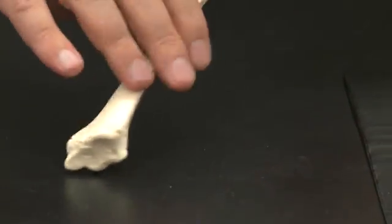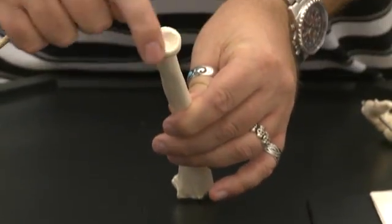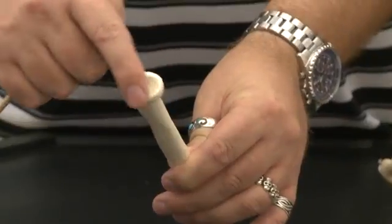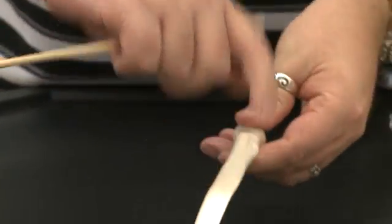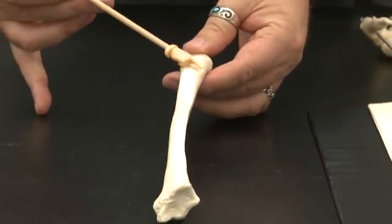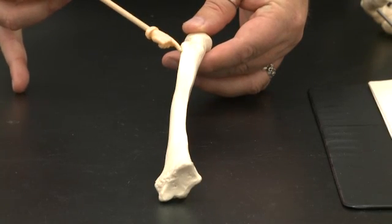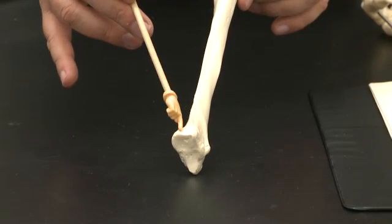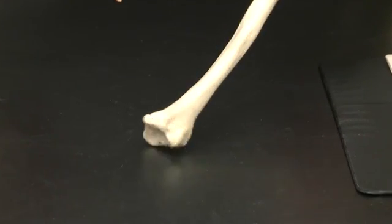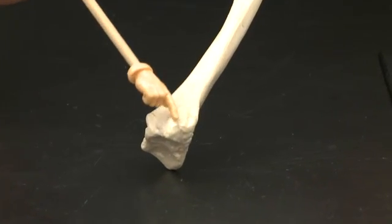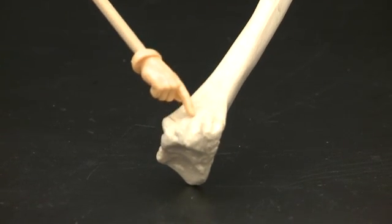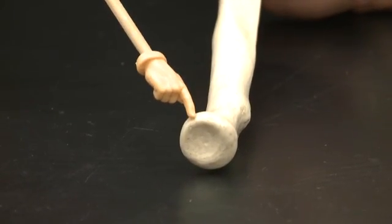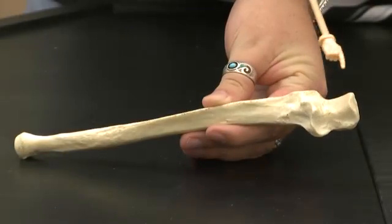This is a radius. It's easy to tell it's a radius because it has the round structure on the end of it. Radial tuberosity, ulnar notch, styloid process and the head of the radius. This is the ulna.